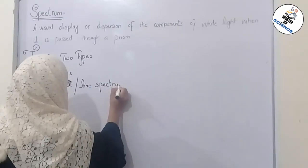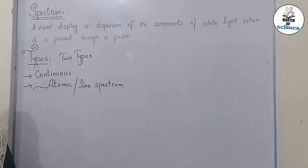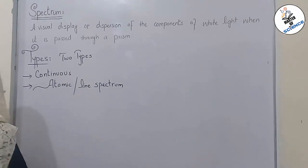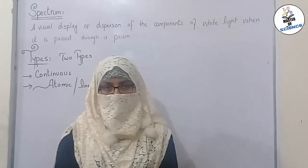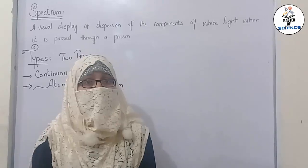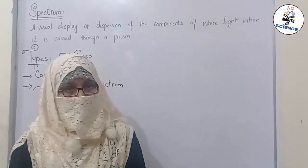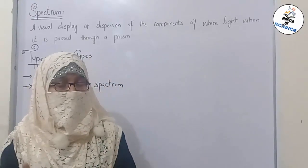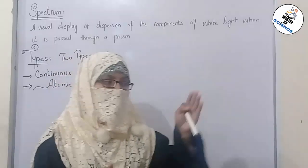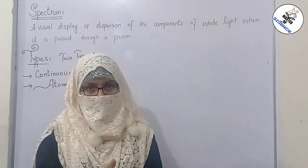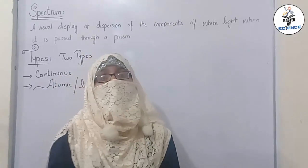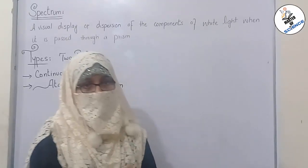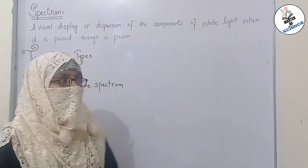Firstly, we will discuss continuous spectrum. What is continuous spectrum? It is that type of spectrum in which a boundary line is not marked — meaning colors merge into one another or diffuse into one another without any dark space between them.